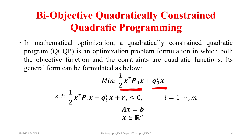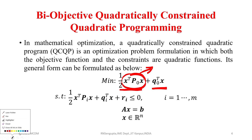The constant one-half is just a scaling factor — it doesn't affect the optimization result. When you differentiate a quadratic term like x-squared, you get 2x, so the 2 and the one-half cancel out. So there is one quadratic component and, highlighted in green, one linear part.